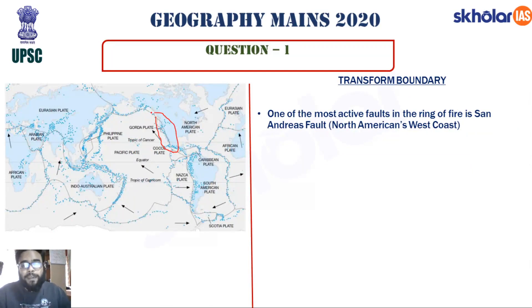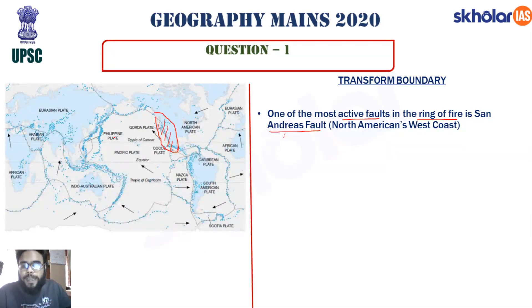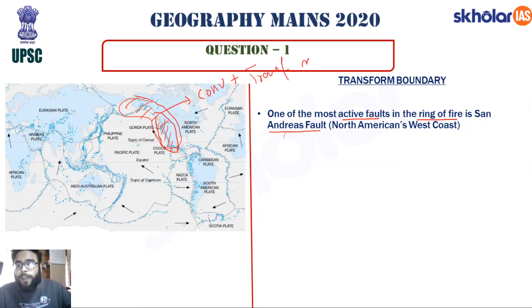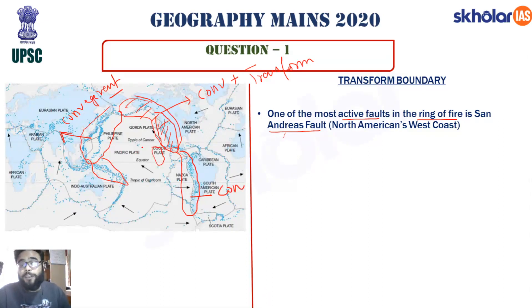For transform boundary: one of the most active faults in the Ring of Fire is the San Andreas Fault along the western coast of the North American plate, where the Juan de Fuca plate slips past the North American plate, causing major earthquakes. To summarize: the Circum-Pacific Belt shows convergent and transform boundaries on the western and eastern margins, and divergent boundaries between the Cocos and Pacific plates.